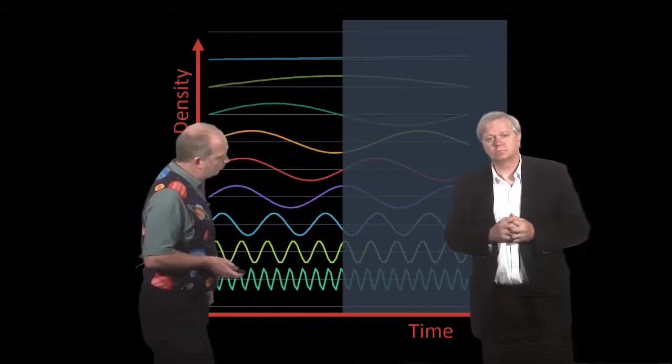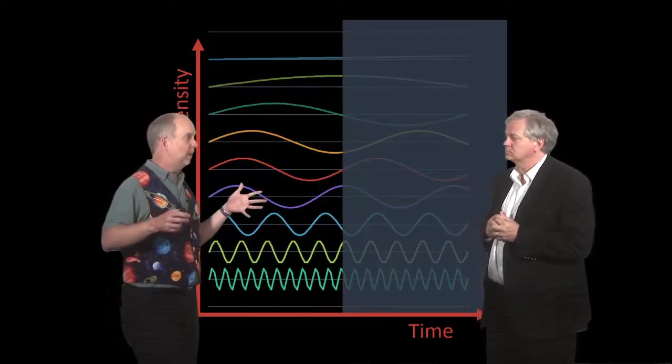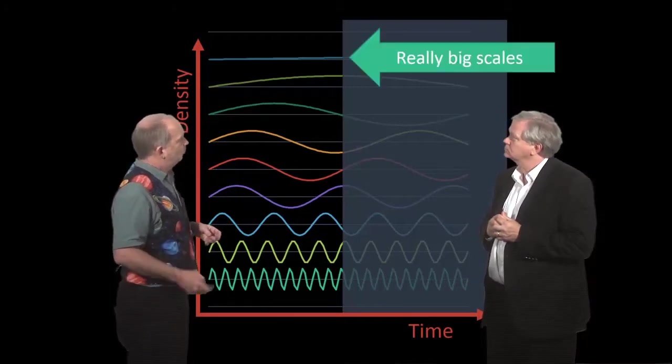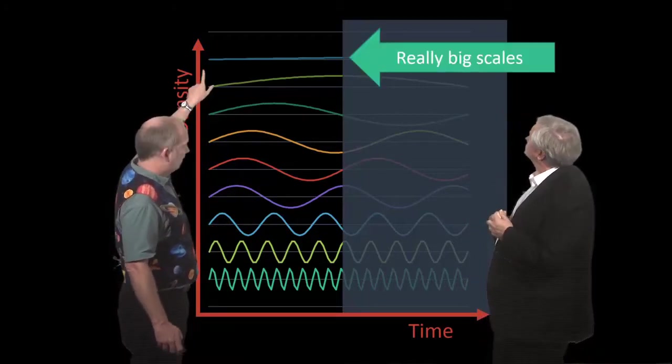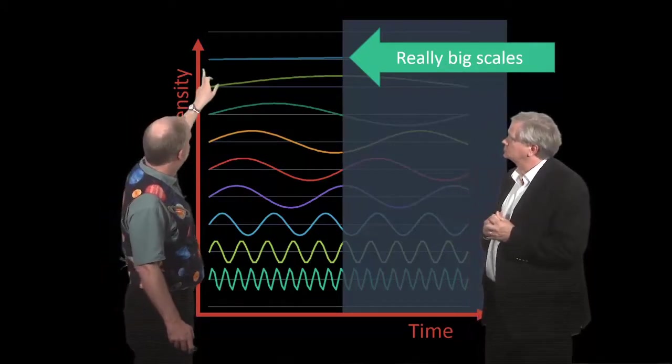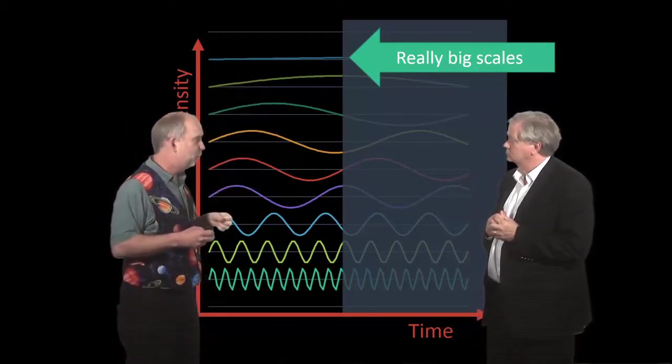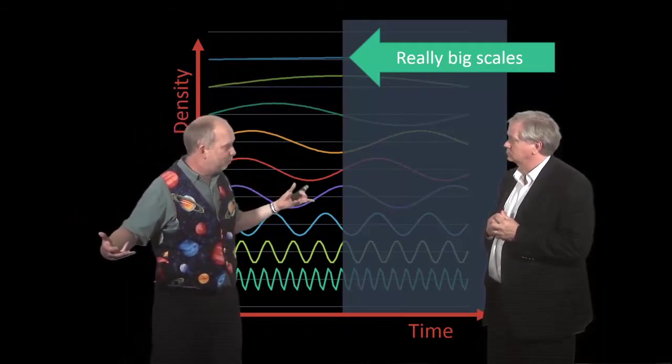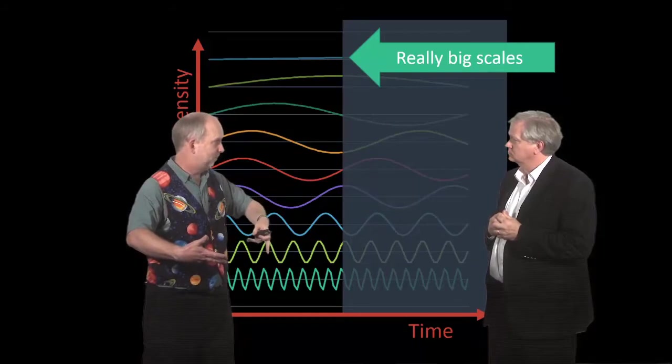And we can talk about this on different scales, because remember our graph was showing how lumpy the universe was on different sizes. So let's look at the really big scales. So these, if you remember, are the really big lumps. Now what's happened there? Well, the densities maybe started going up and stuff has started falling in. But because these lumps are very, very big, there hasn't been enough time in the universe for stuff to fall in significantly.